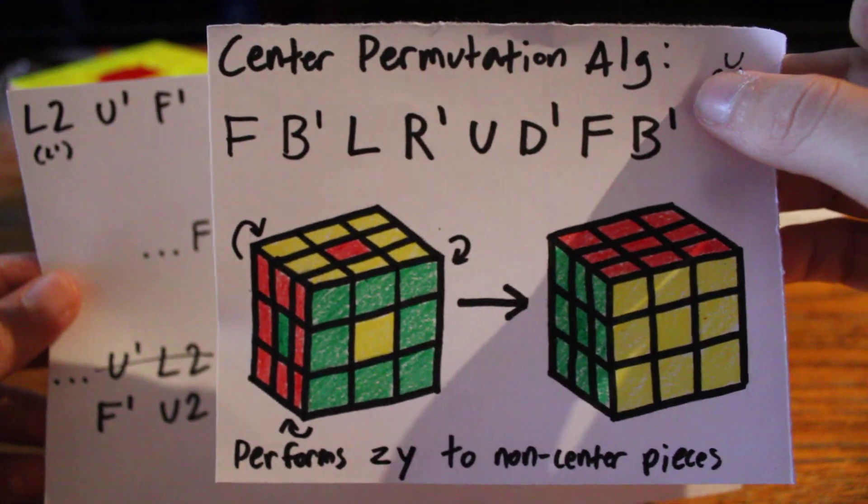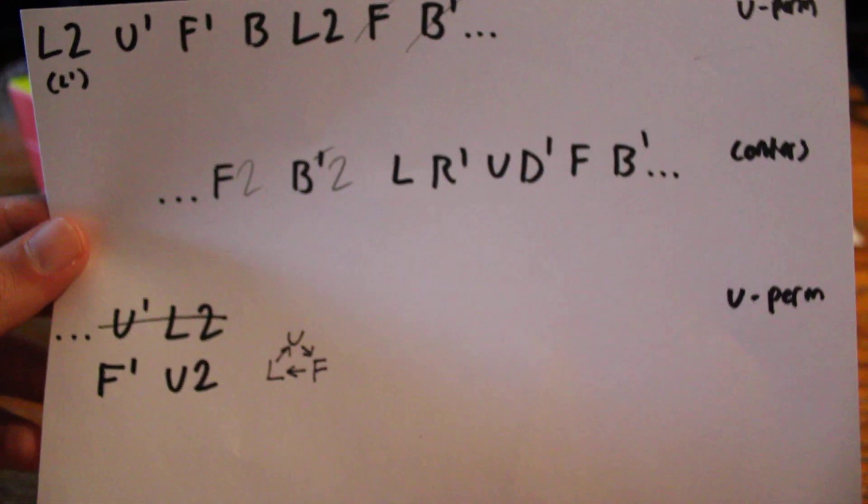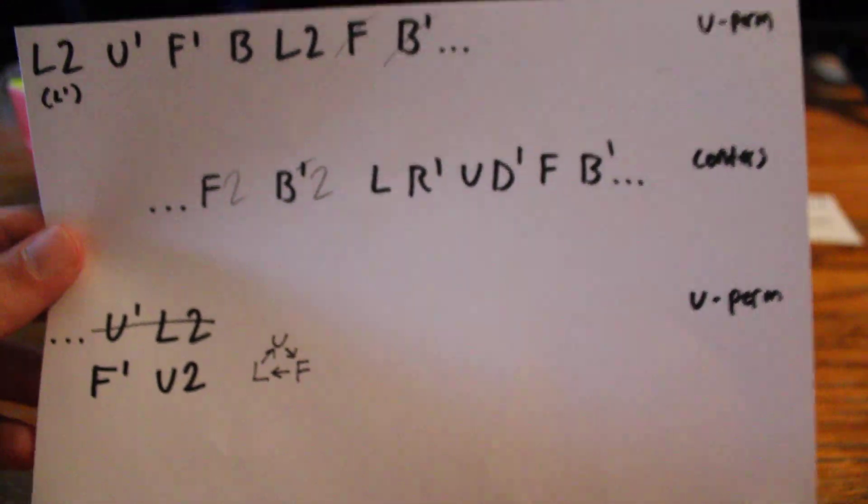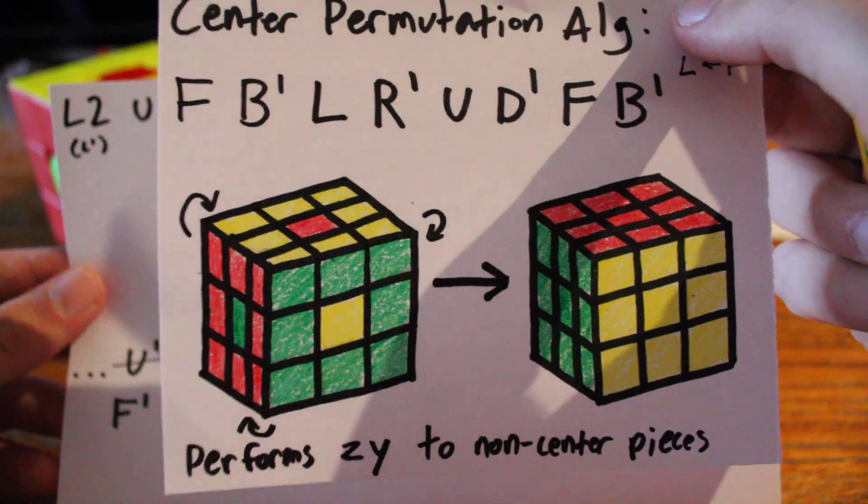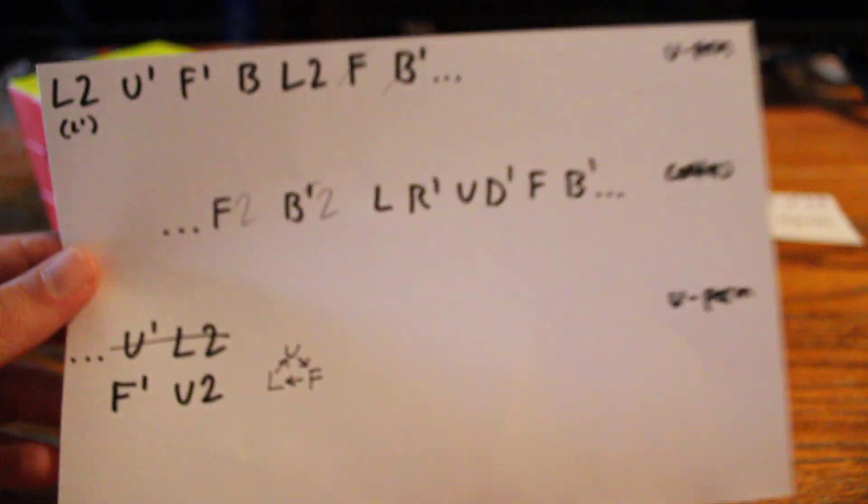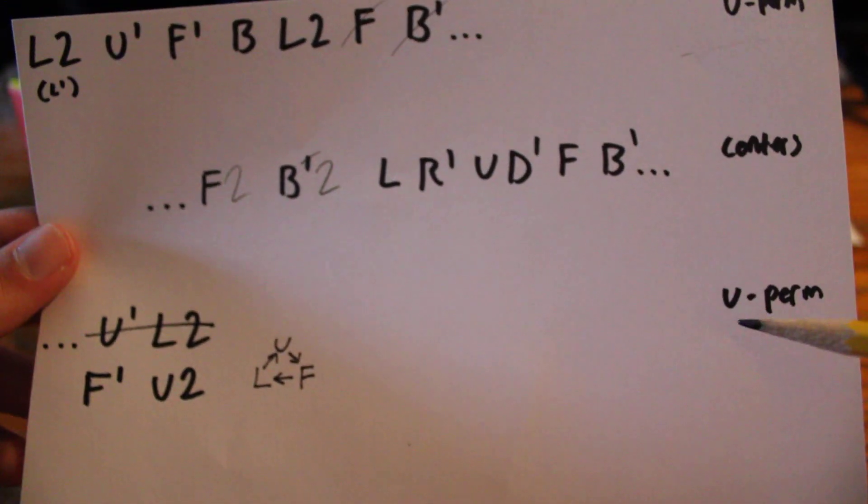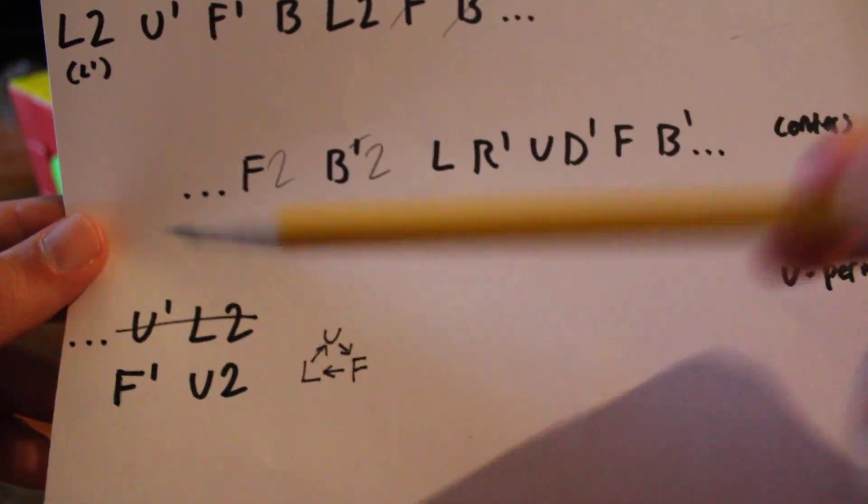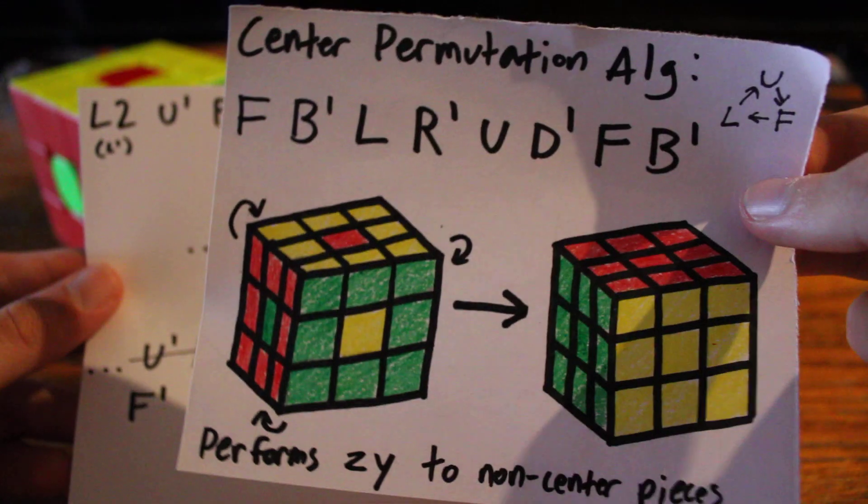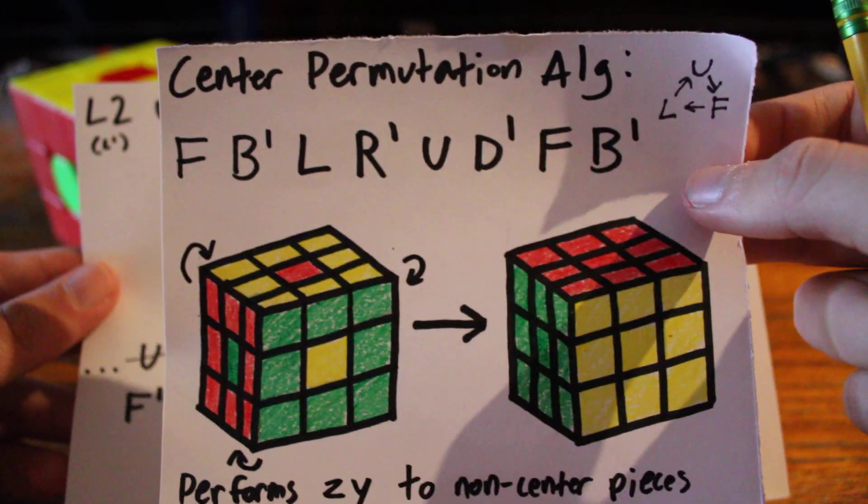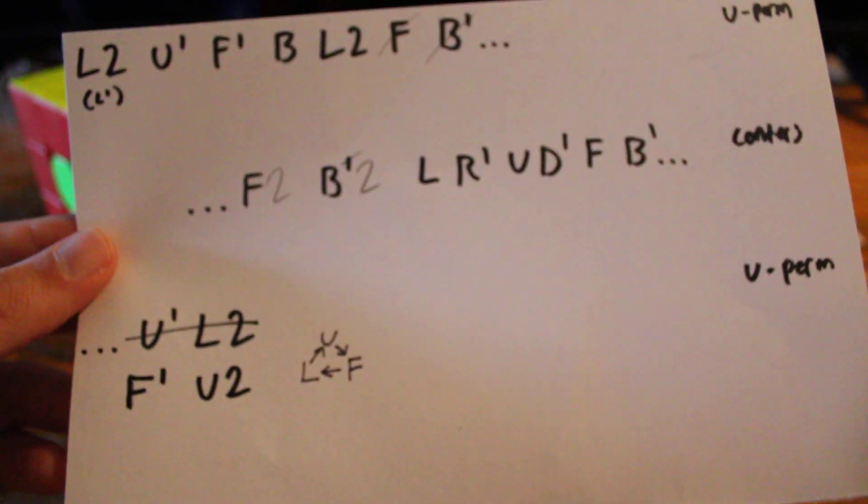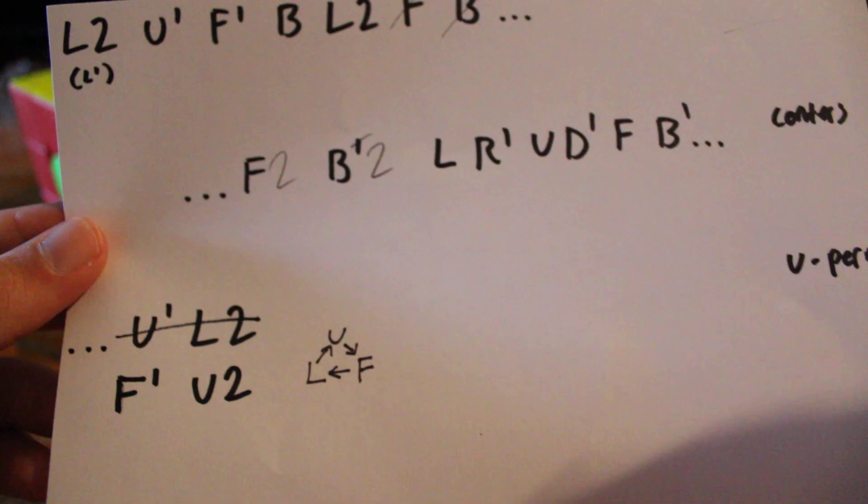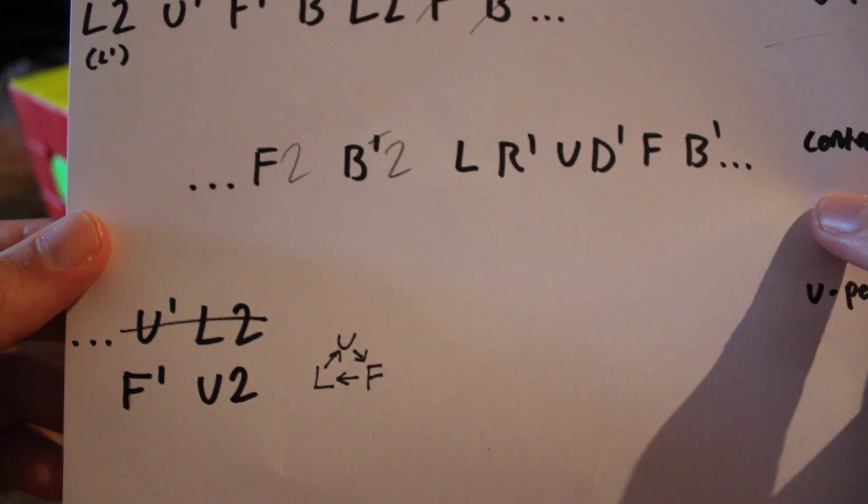So, it doesn't affect the U-perm, but what it does affect is the placement of the pieces on the cube, of course, regarding what side they are on. So, I don't just continue the U-perm as normal down here. I actually have to translate the U and the L to F and U because, again, that is the sides that the pieces move to when I perform the center permutation algorithm. So, the U' and the L2 to finish off the U-perm become an F' and a U2.